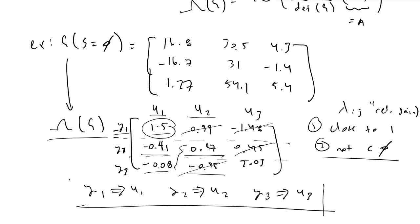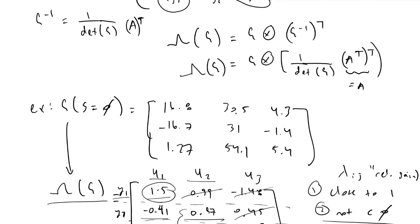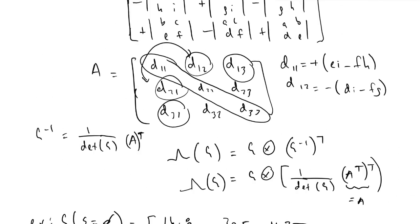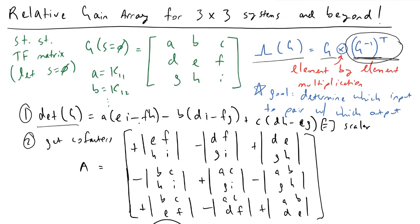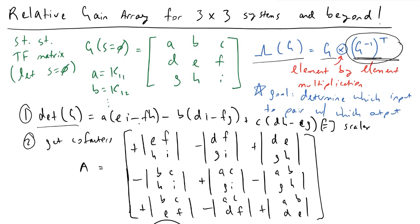Getting this far is the purpose of our relative gain arrays. You can apply this same process with a larger system such as a 4×4 or 5×5 transfer function matrix — let s equal zero, determine the steady-state gain for all parameters, and perform the same logic to determine how you want to pair your inputs and outputs. That's going to wrap things up for this video. I hope it helps — let me know if you have any questions, and thank you for watching.